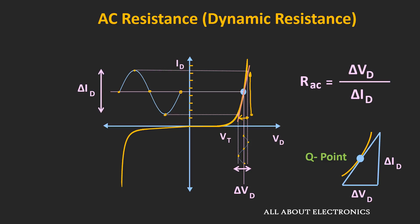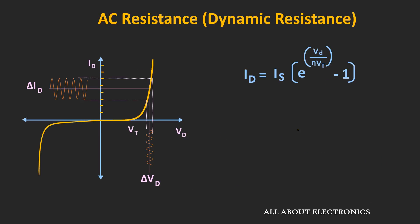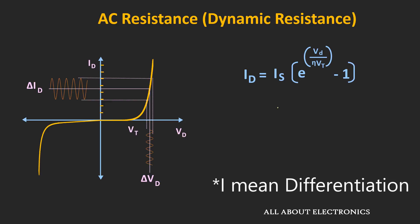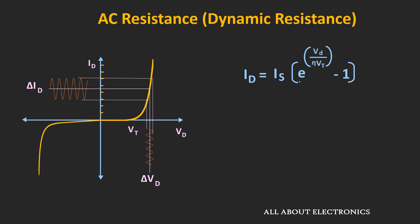The method discussed so far is the graphical way to find the AC resistance. There is one more way: using the diode equation. This expression defines the relationship between the diode current and the voltage across the diode. If we simply take the derivative of this expression, we can also find the value of the AC resistance. Let's derive the expression for this AC resistance.